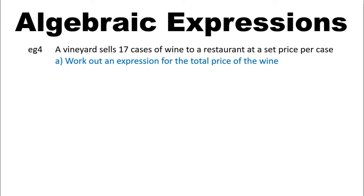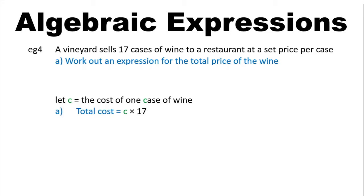Example 4. A vineyard sells 17 cases of wine to a restaurant at a set price per case. A: work out the expression for the total price of the wine. Start by identifying the missing information. I know that they sold 17 cases, but I don't know the price. So let C represent the cost of one case of wine. How would I work out the total price? I would do C times 17 — the cost per case multiplied by the number of cases. A number times a letter, we write the number in front: 17C.